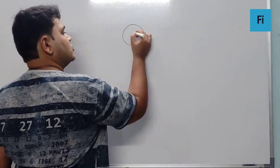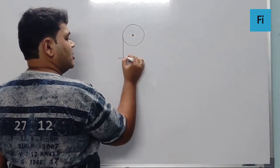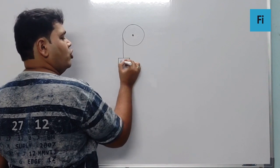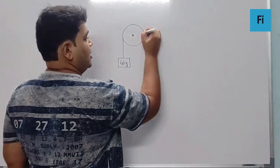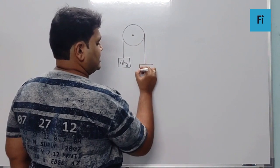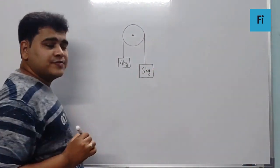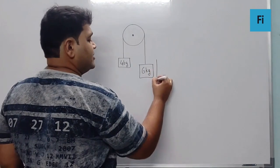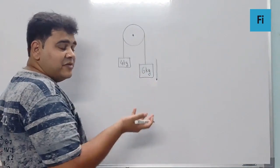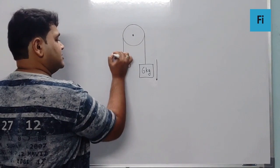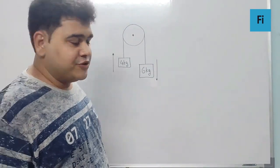Now guys, the diagram given in the question is: this is the pulley. This is a 4 kg mass attached to one part of the string and the other string is attached to 6 kg. Now we are very much aware that this block will move down because of its heavy mass and this block will move up because of the force given by the 6 kg.